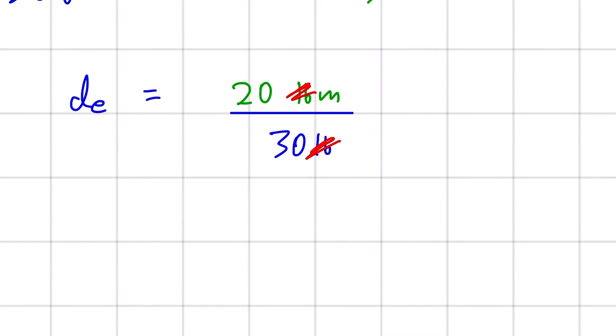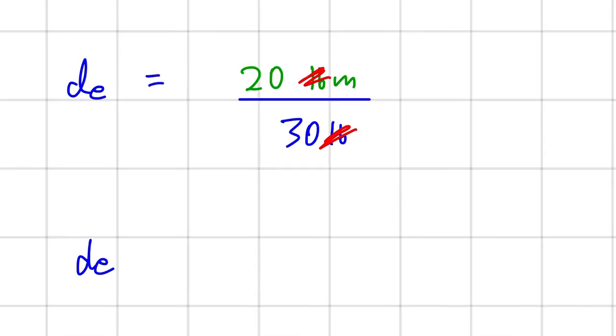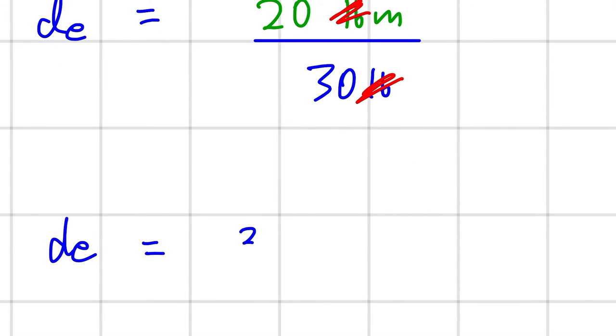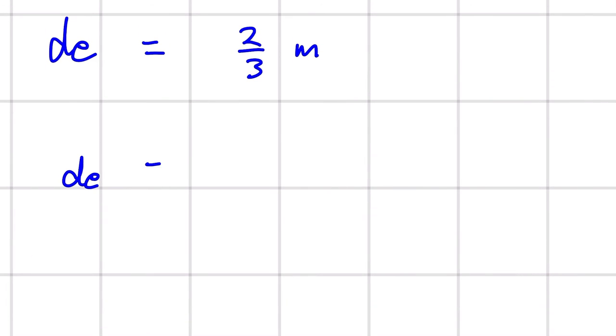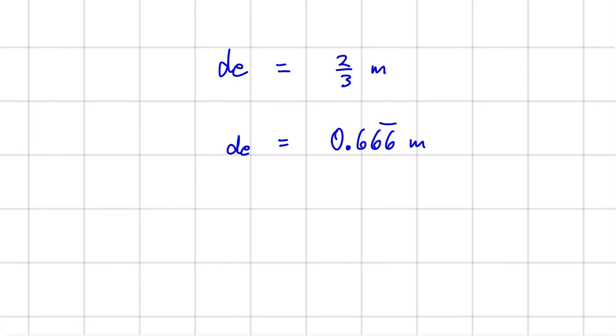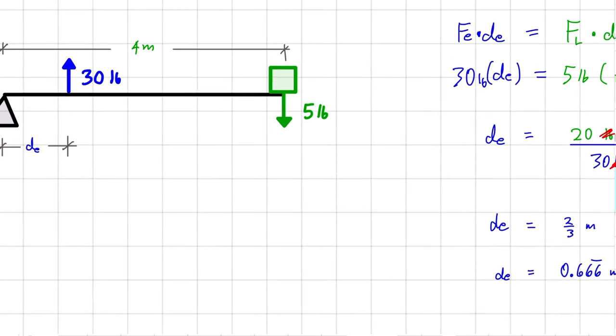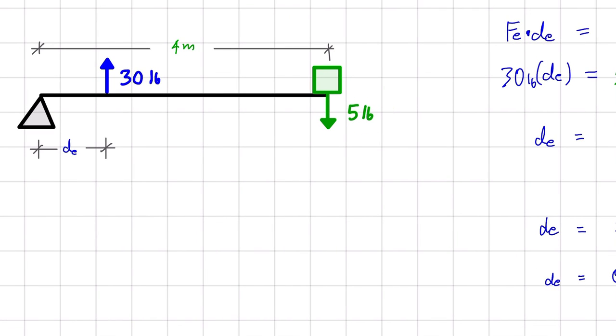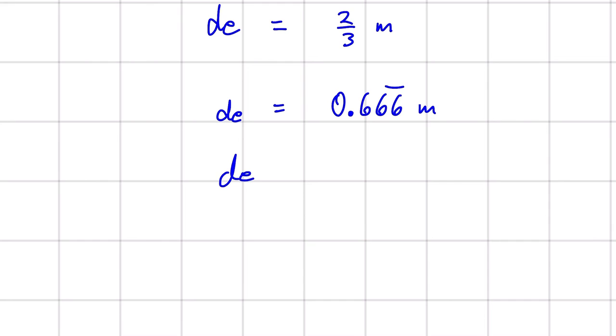And our pounds will cancel out and we'll be left with just meters. And a final answer of 2 over 3 meters or another way to write that as a decimal would be 0.666 repeat meters. But for the sake of this question, I'm going to keep it in one significant digit because some of our numbers that we're given are one significant digit. So we would write that as De is equal to 0.7 meters.